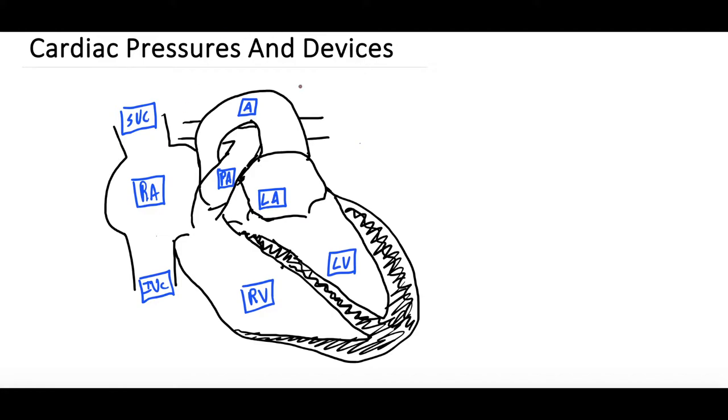So to start I just want to talk about the heart, this beautiful drawing that we put together, and the pressures in each area. So here we have the right side of the heart. We have the superior vena cava, the inferior vena cava, and the right atrium. The typical pressures we would expect in this area are zero to eight millimeters of mercury. That is the right atrium and as such also the superior vena cava, inferior vena cava, zero to eight millimeters of mercury.